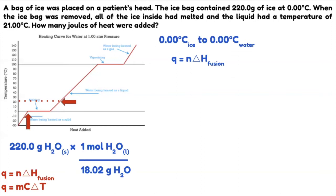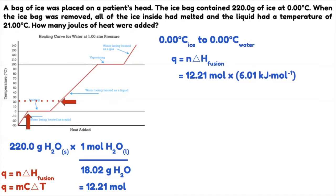Solving this, you will have 12.21 moles. Now we can use this in our equation: moles times heat of fusion. That's 12.21 moles times 6.01 kilojoules per mole. This heat of fusion is constant per substance — 6.01 kilojoules per mole is for water. Solving this, you will have 73.3821 kilojoules. I round off at the end.